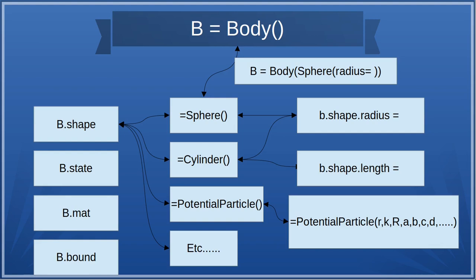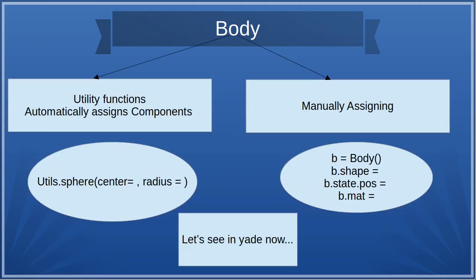In this video we'll focus on the sphere. After giving the shape, you can set 'b.shape.radius'. You can also give the radius directly when creating the body, referencing it as b = Body() with shape set to Sphere with a given radius. You have to give shape, state, material, and bound manually to a body. However, there's a utility function in Python that automatically assigns default values, like 'utils.sphere()' where you mention the center position and the radius, and the material is given automatically.